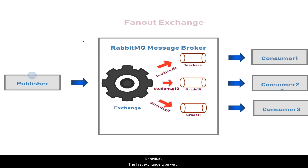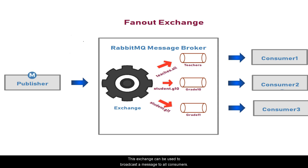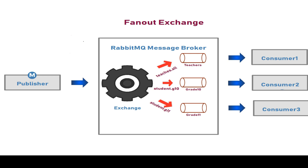The first exchange type we are going to see is the fanout exchange. This exchange can be used to broadcast a message to all consumers. Basically, what it does is route all messages to all queues which are bound to that particular exchange, and ultimately consumers will consume messages from all these queues.